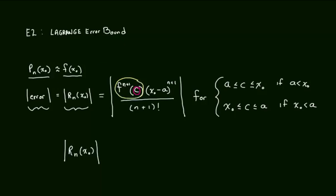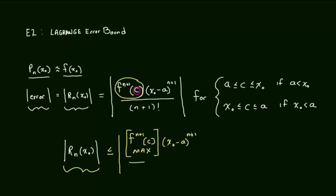The error is going to be less than or equal to the (n+1)th derivative of c at its maximum value. That maximum value — if we can determine that — then we can say that the error is less than this quantity. I want this to feel crystal clear after we go through the next couple of examples.